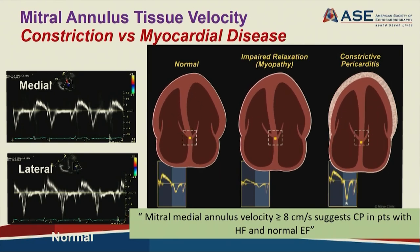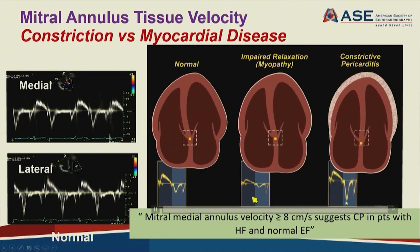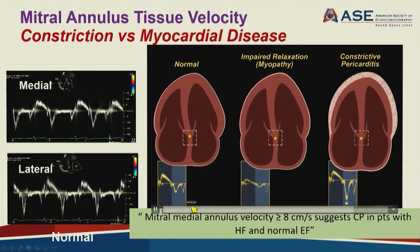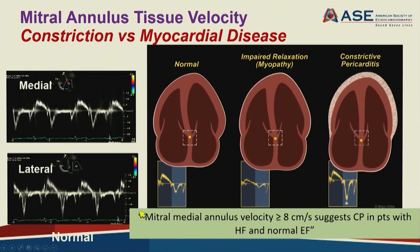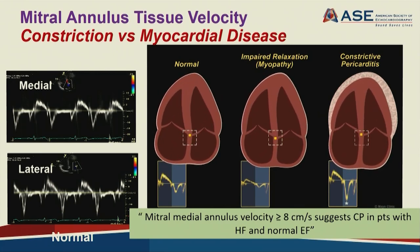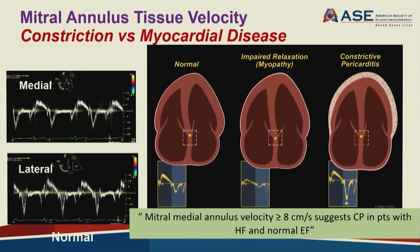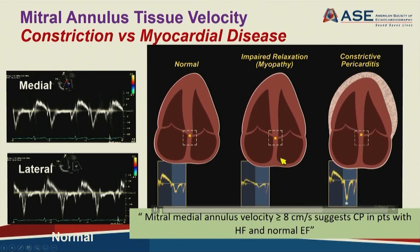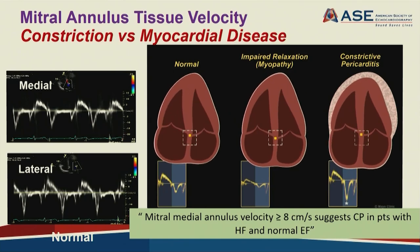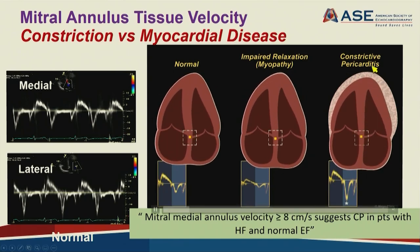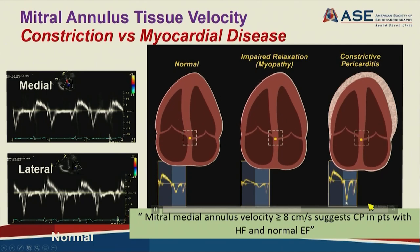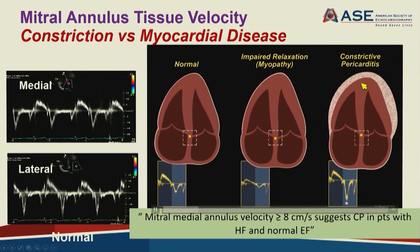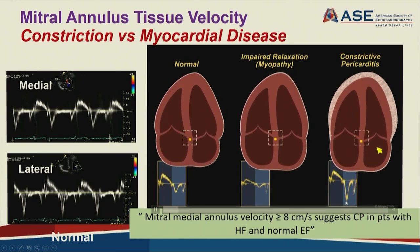Another important parameter is mitral annulus velocity, which reflects myocardial relaxation. Normally, medial E-prime is about 10 and lateral about 15. In all forms of myocardial disease—amyloid, hypertrophic cardiomyopathy, coronary disease—E-prime velocity and relaxation are reduced, usually less than 7 and in symptomatic patients often 5 cm/s or less. But in constriction, due to limitation of lateral cardiac motion, most filling comes from vigorous up-and-down annular motion, so E-prime velocity increases as a result.